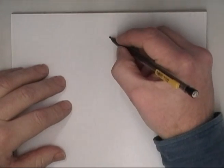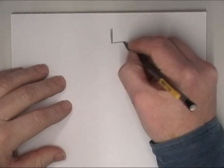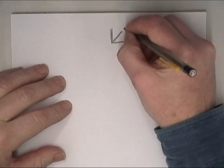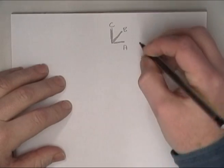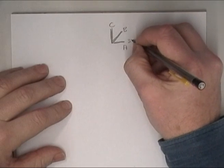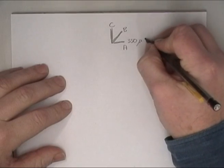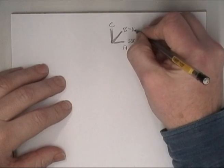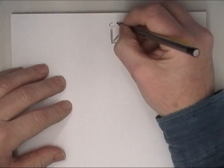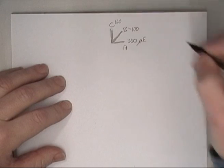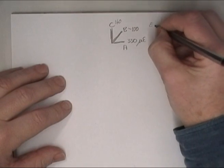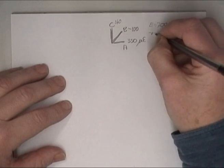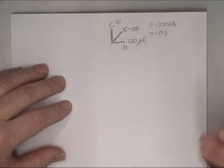So we'll do a strain circle for this element, 45 degrees strain gauge rosette, and we'll label these A, B, and C. This one was 350 microstrain, B is minus 100, and C is plus 160. And we also need E equals 200 gigapascals, and Poisson's ratio is 0.3.